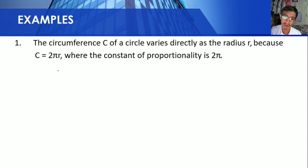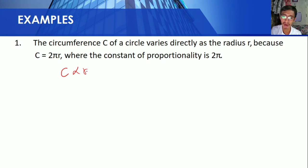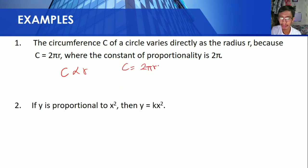The graph of direct variation shows that as x increases, y increases at the same time. For example, the circumference C of a circle varies directly as the radius r because C is equal to 2πr, where the constant of proportionality is 2π. If y is proportional to x squared, then y is equal to kx squared.